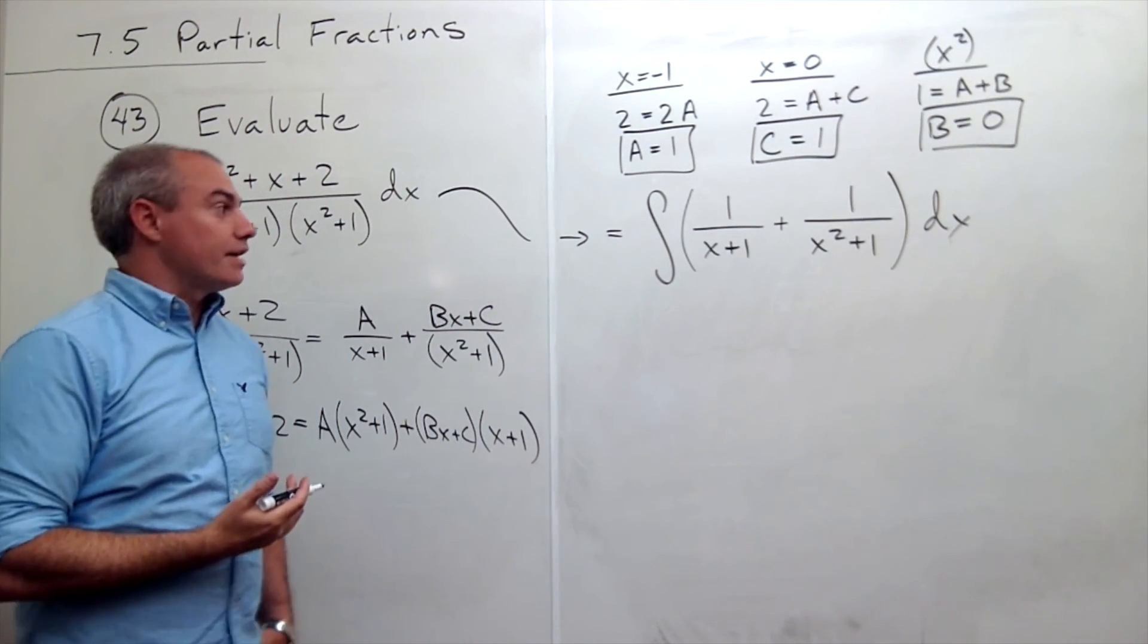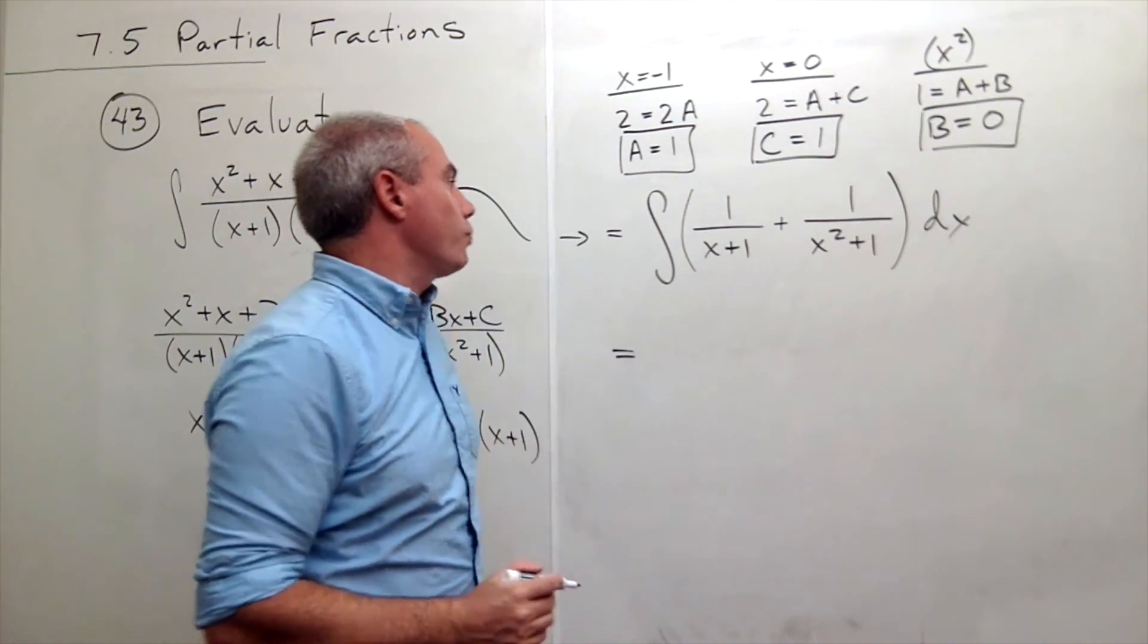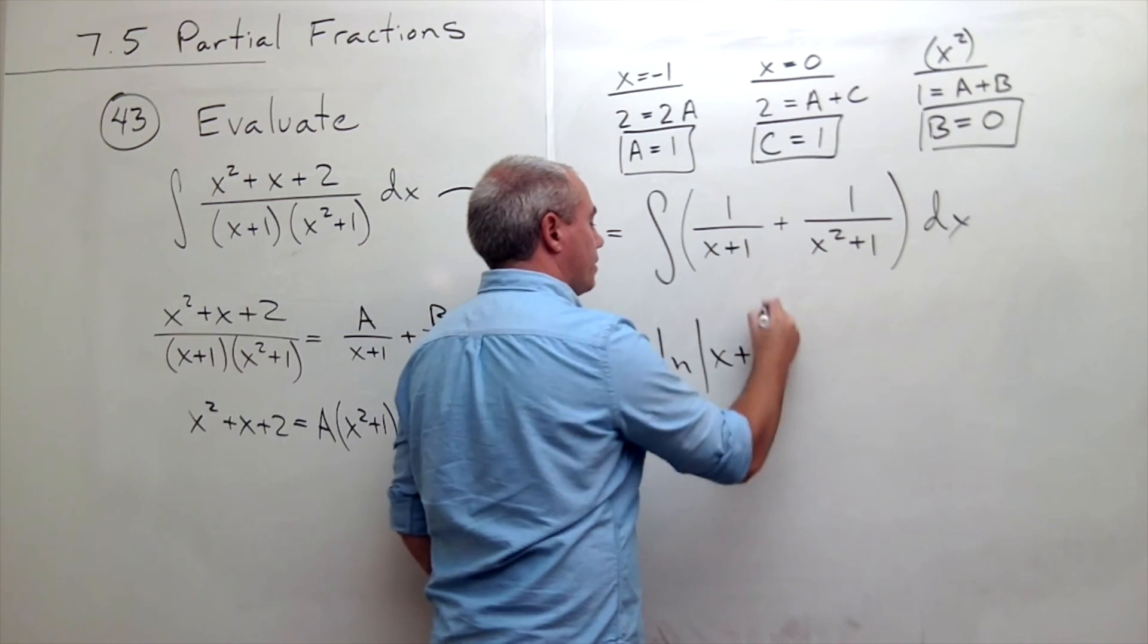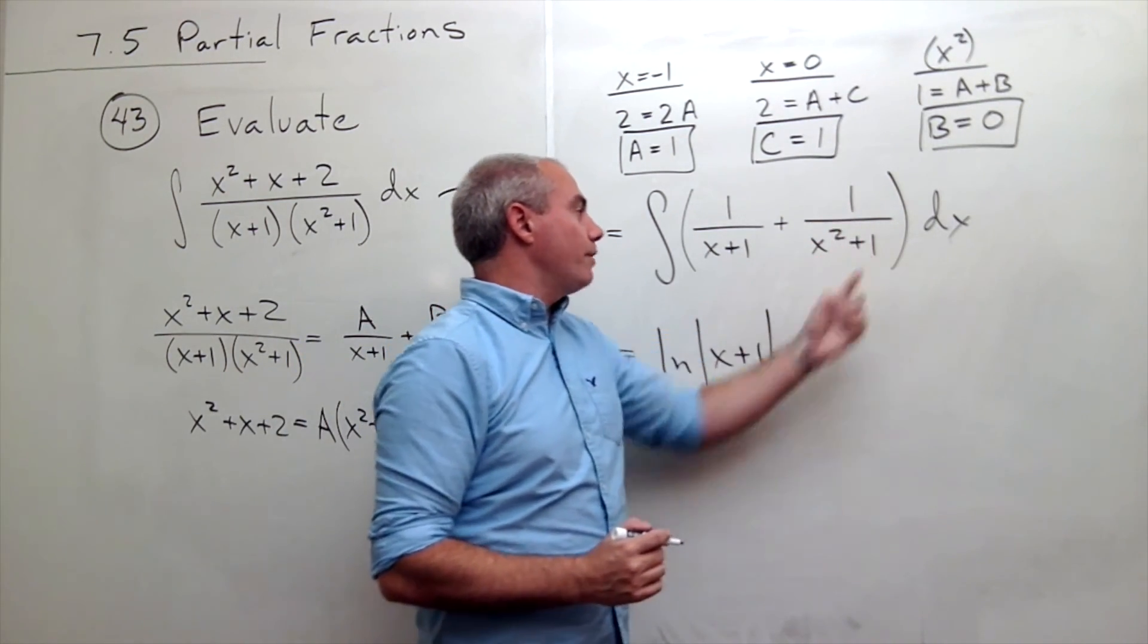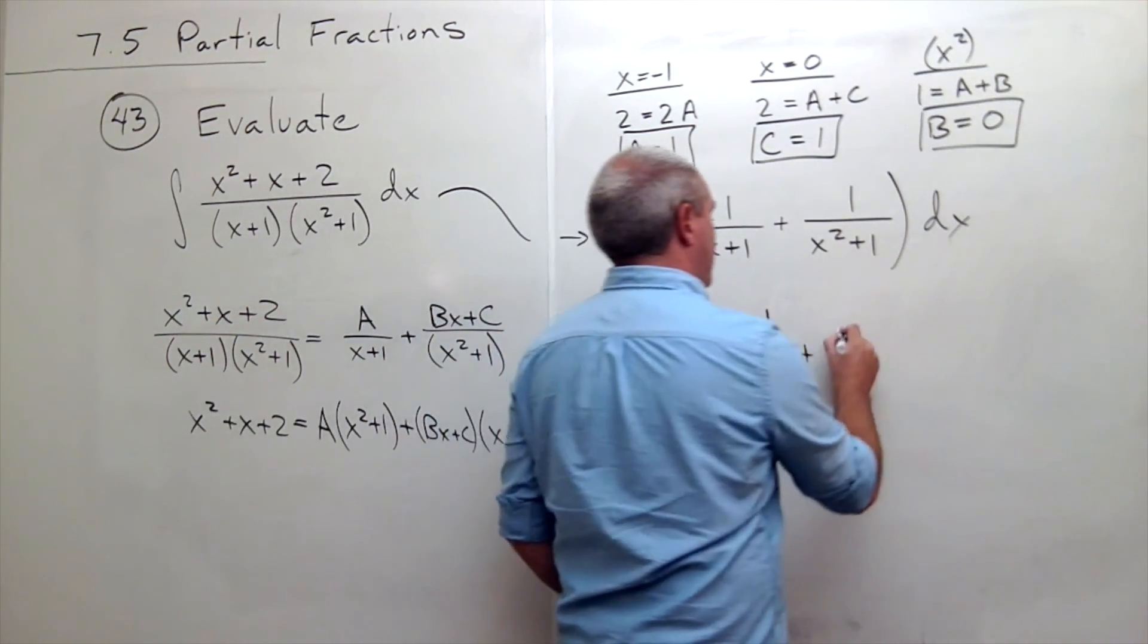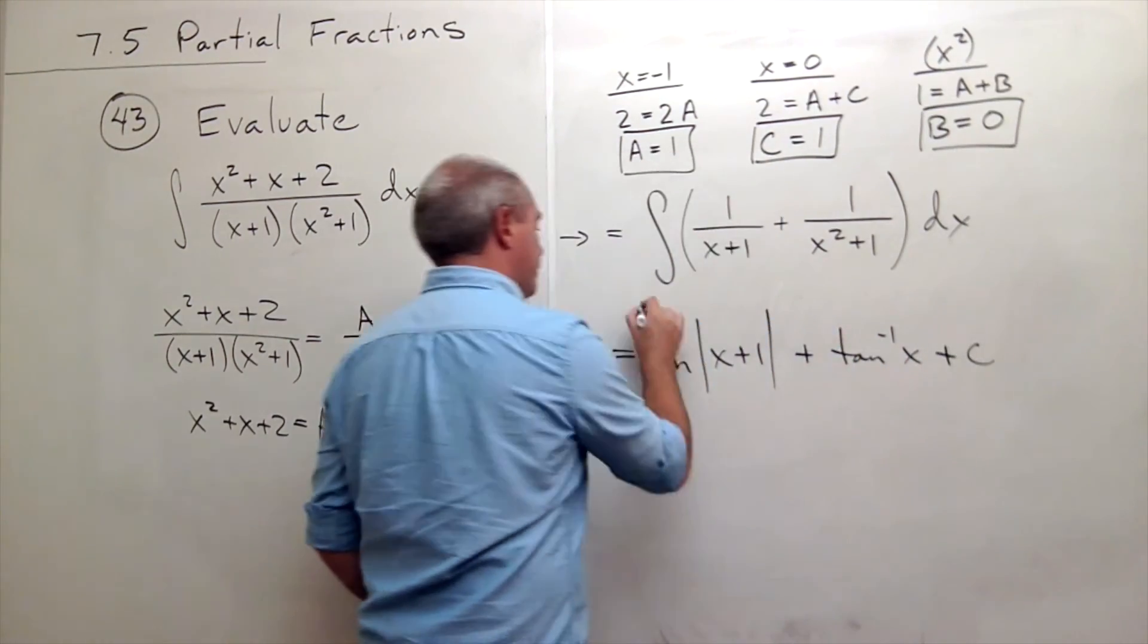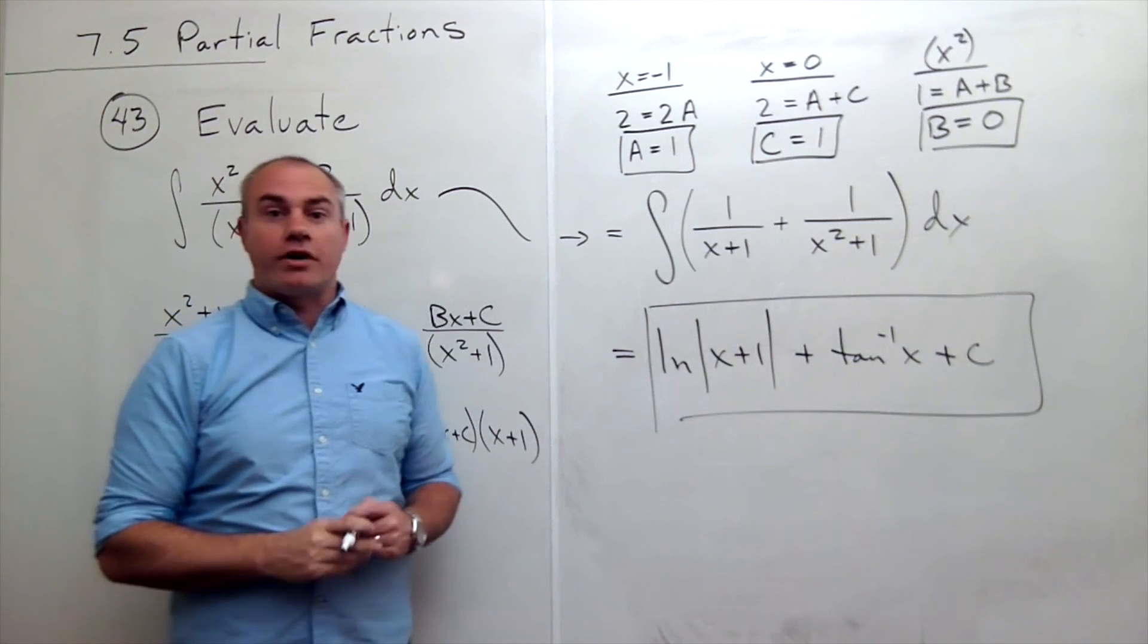And now we're ready to take an antiderivative. The antiderivative of 1 over x plus 1, that's just a natural log of absolute value of x plus 1. And the antiderivative of 1 over x squared plus 1, that's just a tan inverse of x plus c. And we have our antiderivative.